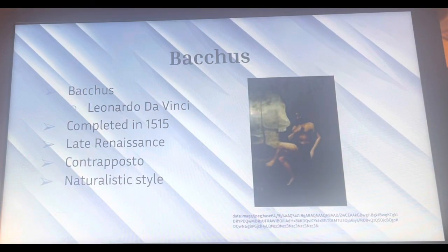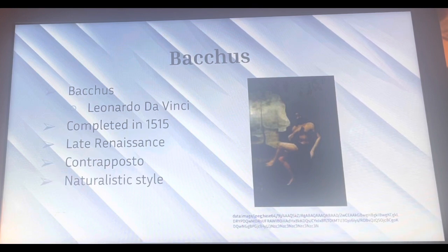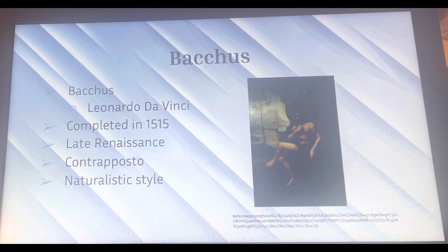Another one of his paintings is called Batuos, completed in 1515, and is another example of late Renaissance artwork. The image is a little blurry and faded, but it is a great example of contrapposto — you can see the man sitting in a relaxed pose with his leg up and arms to his sides. It also shows a naturalistic style, as the background features trees and a nature setting.